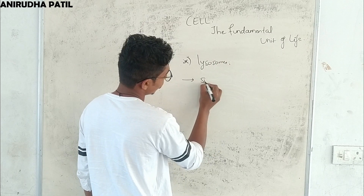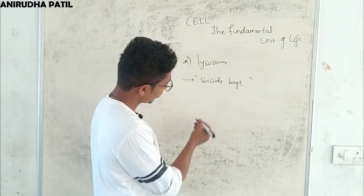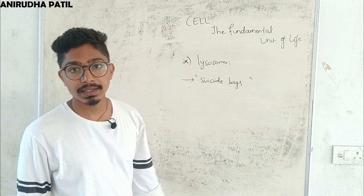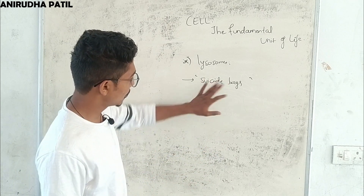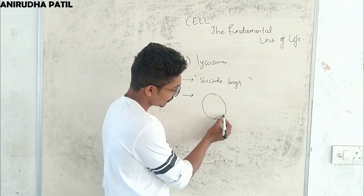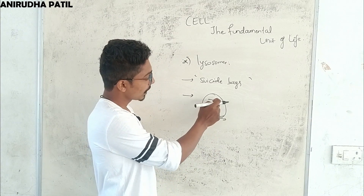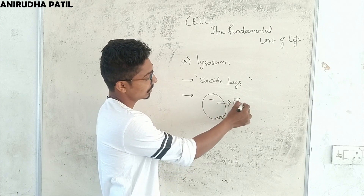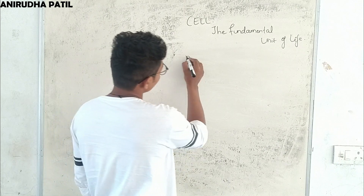Lysosomes are known as the 'suicide bags' of the cell. They contain powerful enzymes that digest any foreign material harmful to the cell. When a cell gets damaged, lysosomes burst and their enzymes digest the entire damaged cell, thereby protecting the surrounding cells. This is why lysosomes are very important.